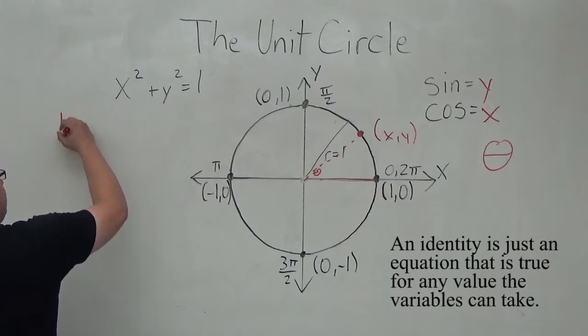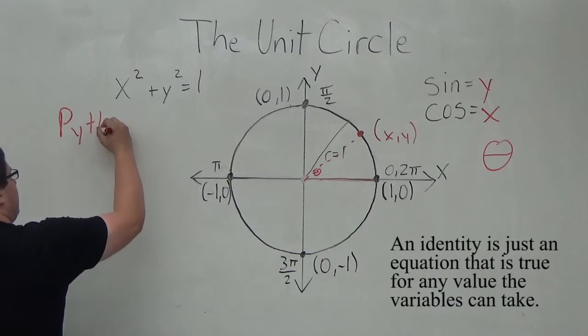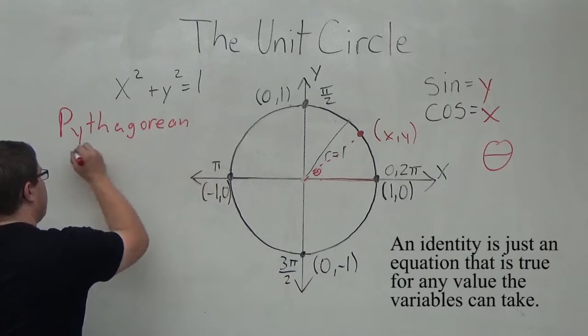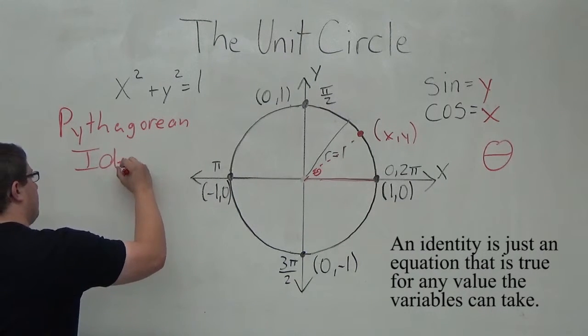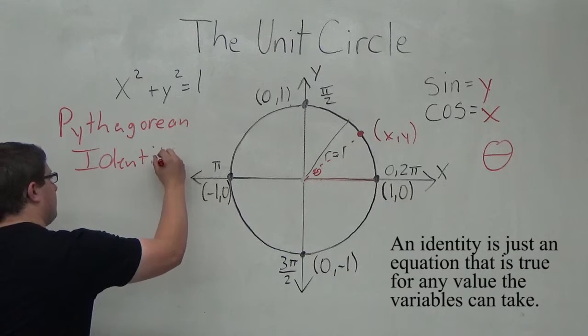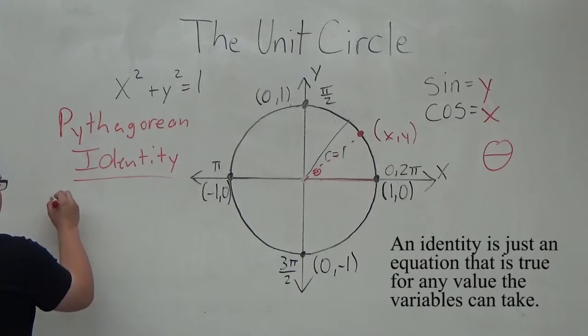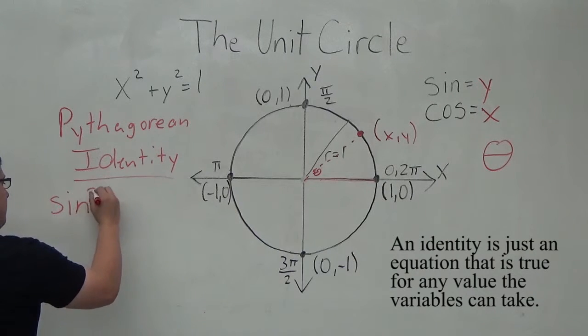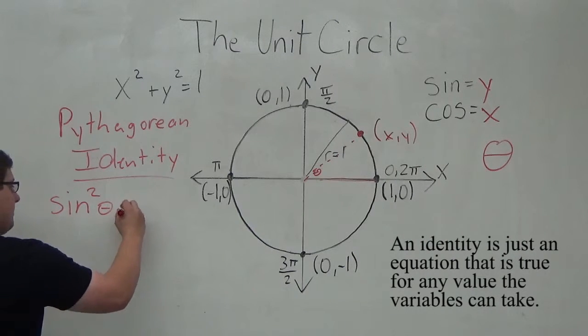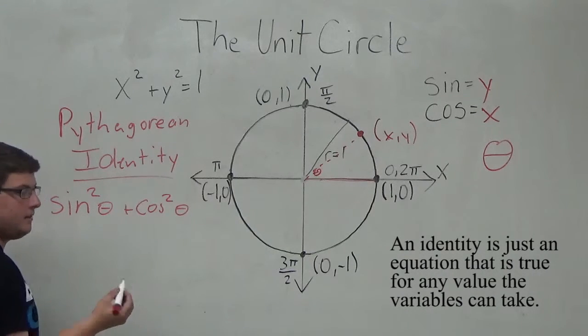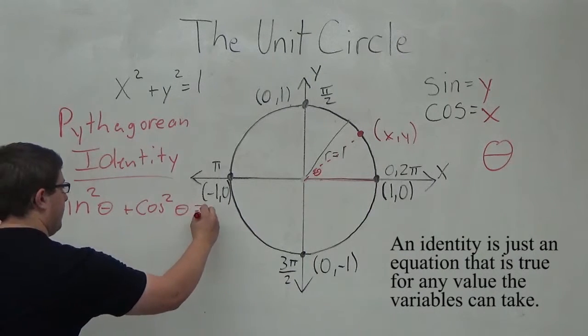The Pythagorean identity tells us that the sine squared of an angle plus the cosine squared of an angle equals 1: sin²(θ) + cos²(θ) = 1.